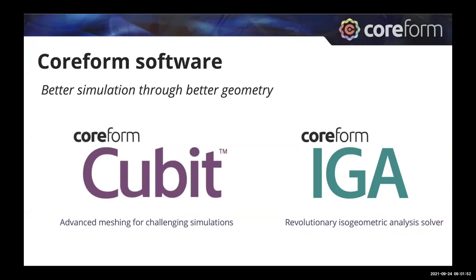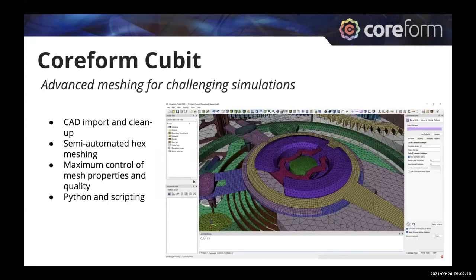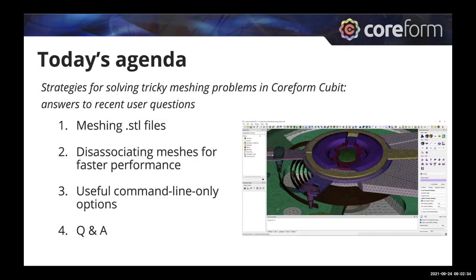At Coreform, we're developing software to improve simulation through better geometry. We have two products: Coreform Cubit, used across industries for advanced meshing for challenging simulations, and Coreform IGA, our new revolutionary isogeometric analysis solver. Today we're focused on Coreform Cubit. This is an intermediate-focused webinar — we assume many of you are already familiar with Cubit and using it for CAD cleanup, semi-automated hex meshing, tet meshing, and Python scripting.